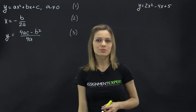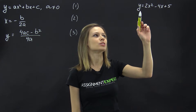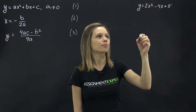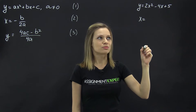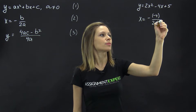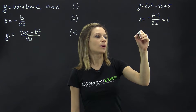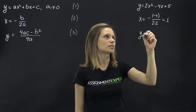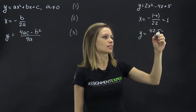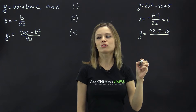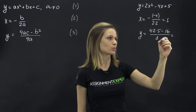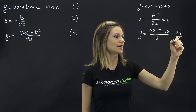Let's consider an example. We have the parabola y equals 2x squared minus 4x minus 5, and the coordinates of its vertex are the following: x equals negative b over 2a, that is negative negative 4 over 2 times 2, which equals 1. y equals 4ac, that is 4 times 2 times 5, minus b squared, that is 16, over 4a, which is 8. So we have 40 minus 16, that is 24, over 8, which equals 3.